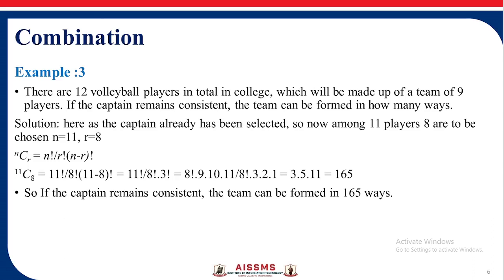Now there are 12 volleyball players in total in college which will be made up of a team of 9 players. If the captain remains consistent, the team can be formed in how many ways? So here the captain is already selected. So now 11 players are there and 8 are to be chosen. So n is equal to 11 and r is equal to 8.